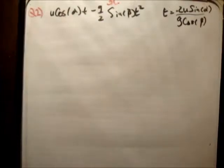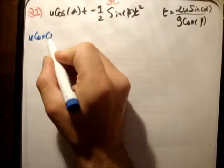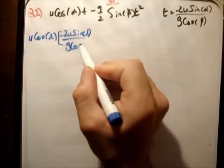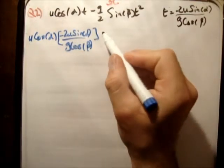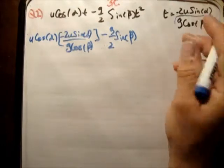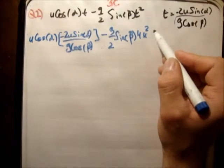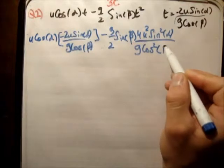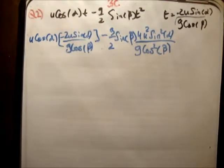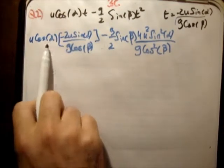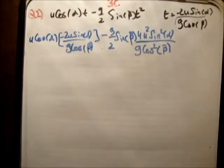So plugging in the value for t, we get u times cos(alpha) times [−2u sine(alpha) / (g cos beta)] minus g/2 · sine(beta) times t squared — which gives 4u² sine²(alpha) / (g cos²beta). Now this is where we start to get tricky. You could try 2 sine(alpha) cos(alpha) = sine(2alpha), but that wouldn't get us anywhere.